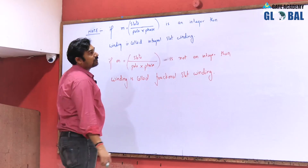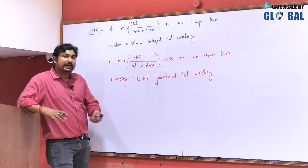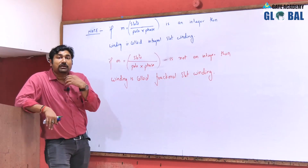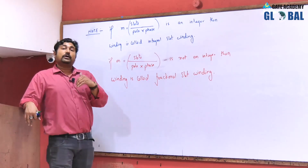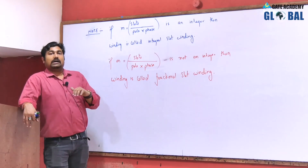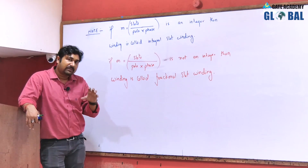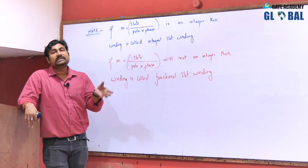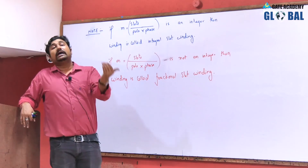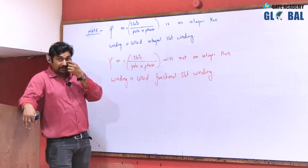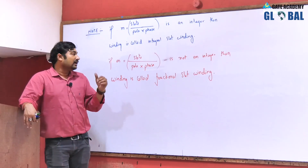For fractional slot winding, the above formula is not true. Physically, some portion of the C phase enters into the A phase portion because of short pitching. Along with the distribution, if we are using short pitching, there is a possibility that some of the C phase conductors are entering into the A phase conductors. Because of that, m is found not to be an integer.